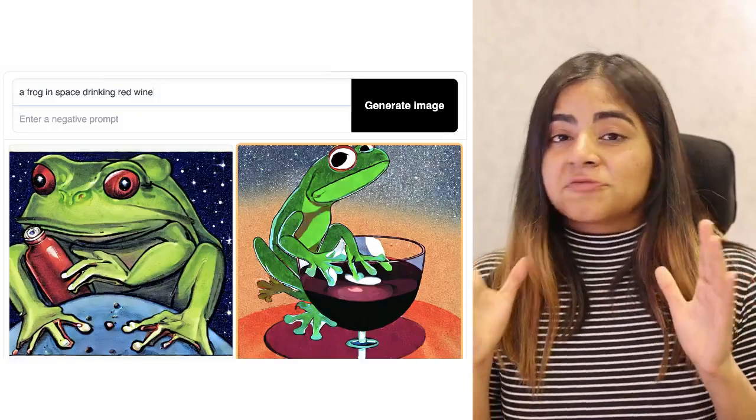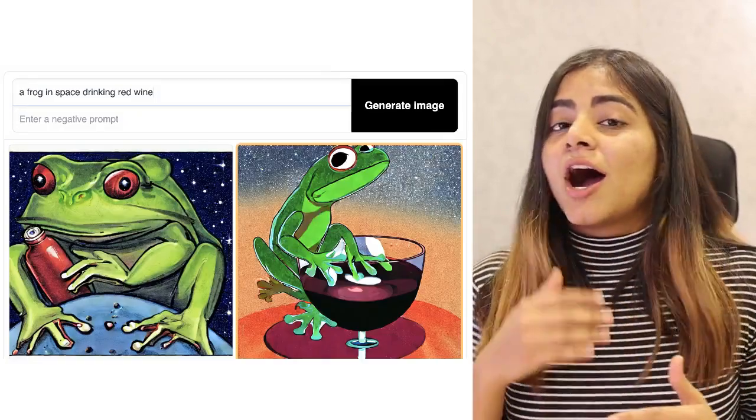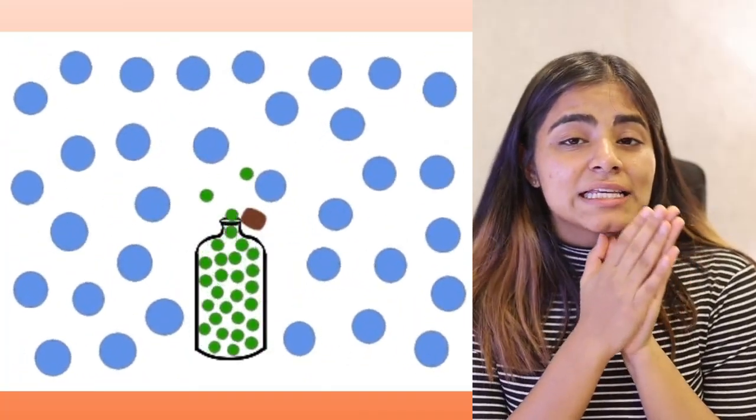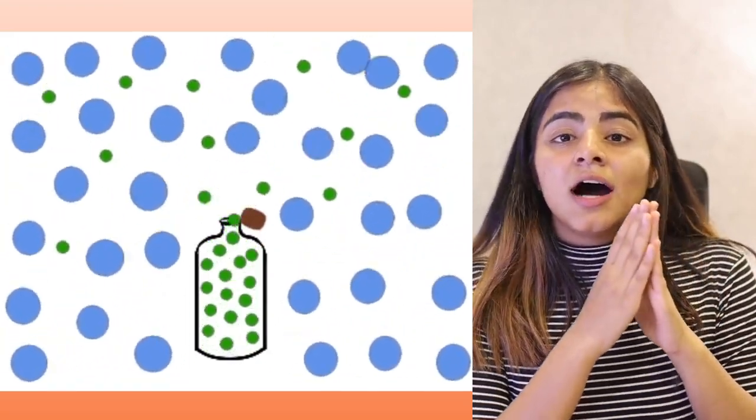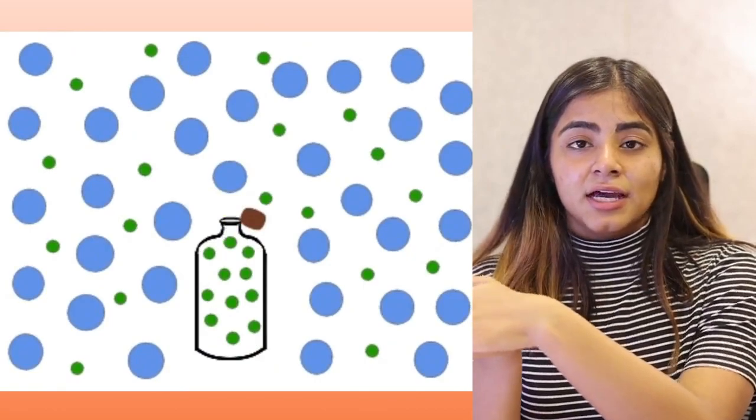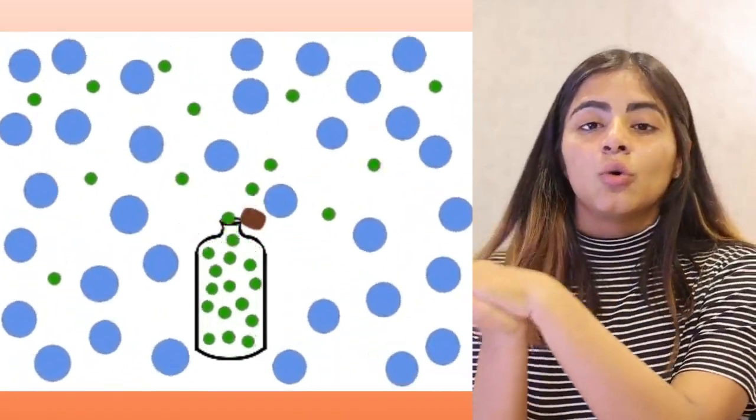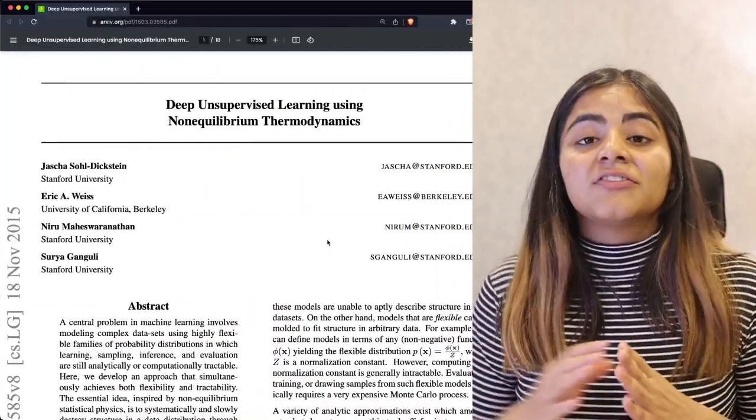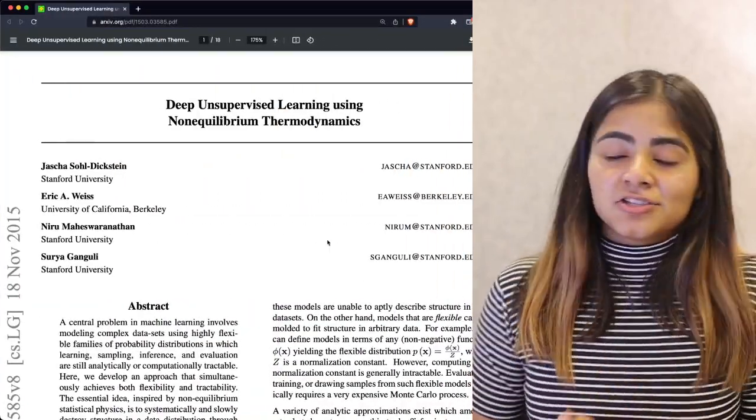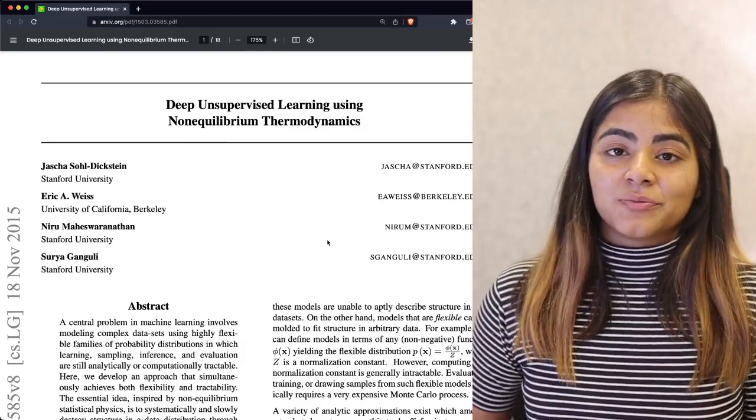So without going into much mathematical detail, let's see how diffusion works. Diffusion is that process in thermodynamics where particles move from a high density to a low density area, or a high energy to a low energy area. This is the concept that the very first paper on diffusion was based on: deep unsupervised learning using non-equilibrium thermodynamics.